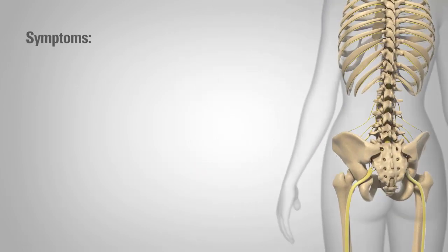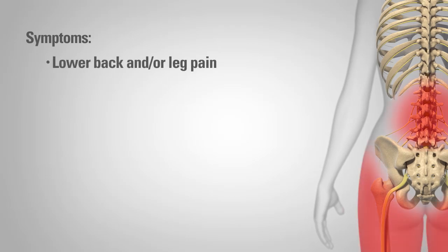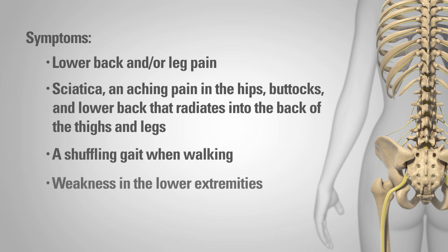Symptoms of spondylolisthesis may include lower back and/or leg pain, sciatica, an aching pain in the hips, buttocks, and lower back that radiates into the back of the thighs and legs, a shuffling gait when walking, weakness in the lower extremities, and abnormal posture.